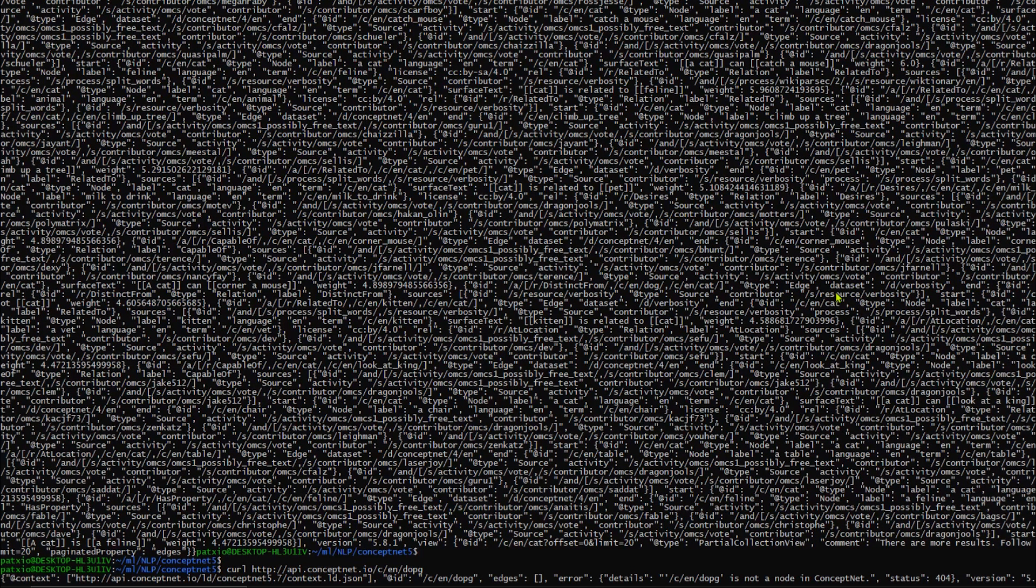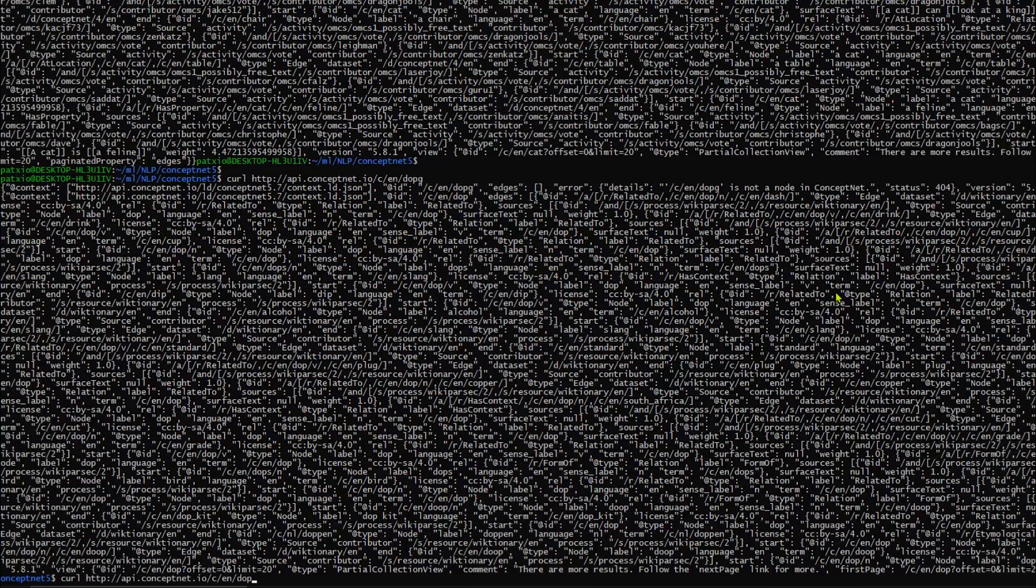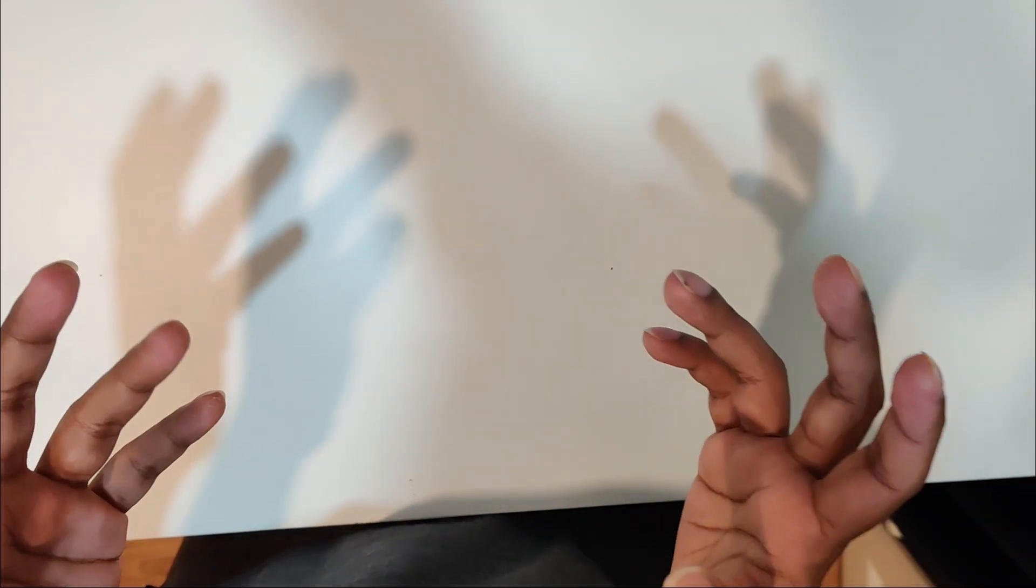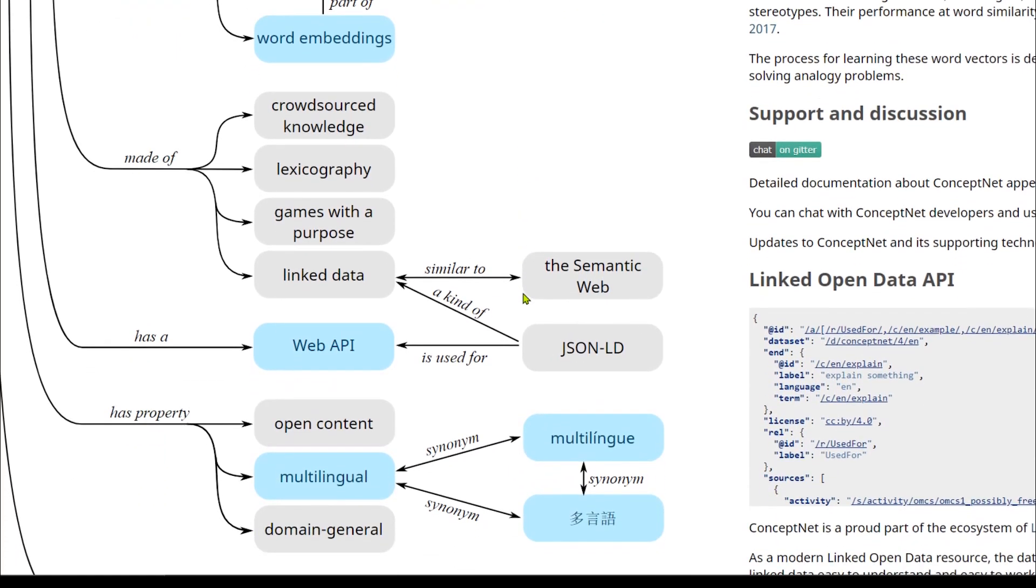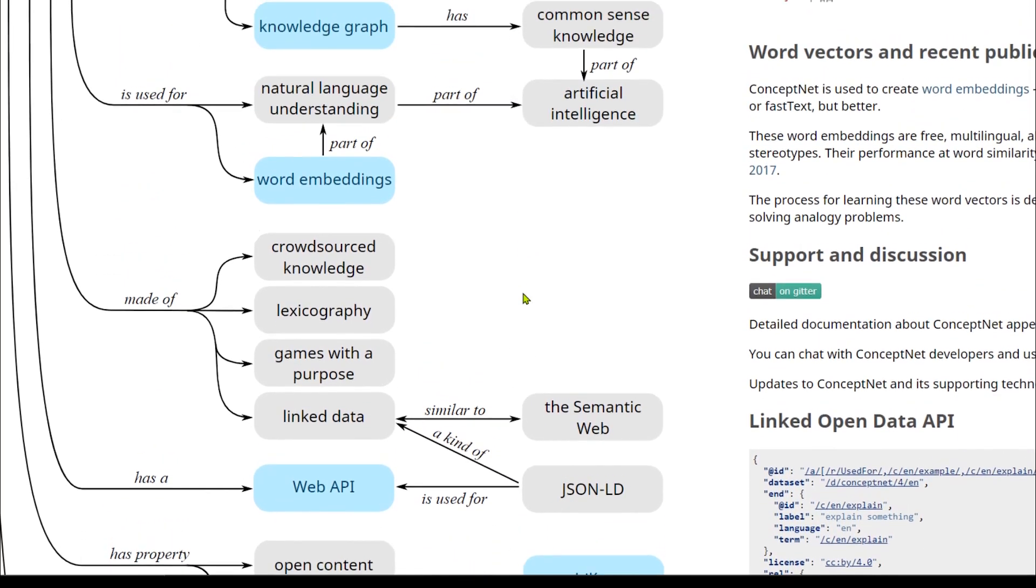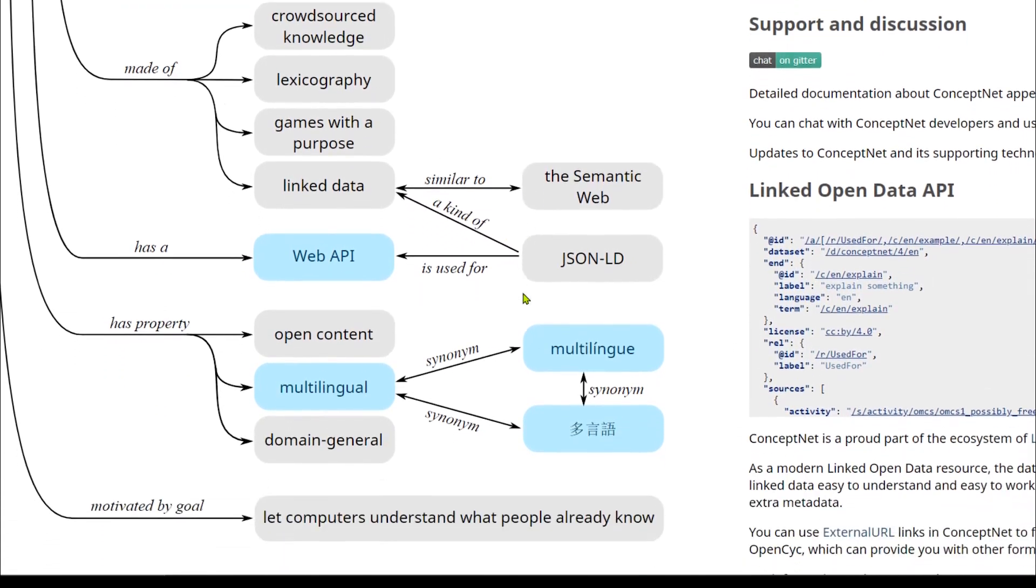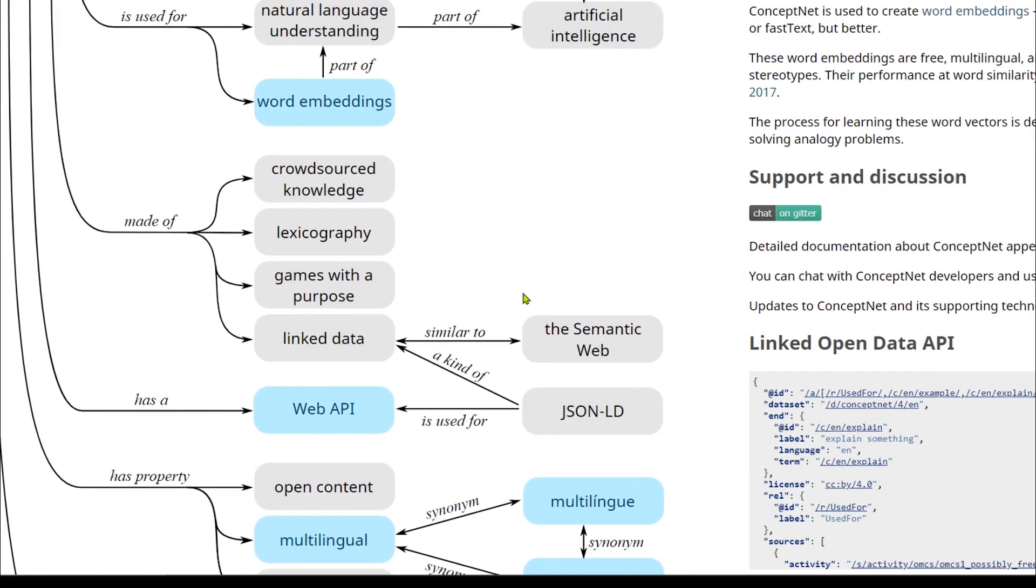Or you can build your own instance of that ConceptNet and run it on your own server or database. In either way, it is the core element in most of common sense reasoning approaches, as you can see that ConceptNet 5 has been attributed by state-of-the-art approaches of defining common sense reasoning.